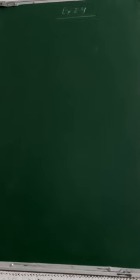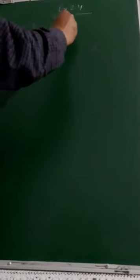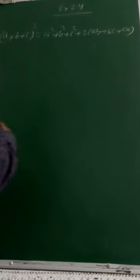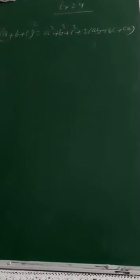Good afternoon to all. So here we are back to Exercise 2.4. Yesterday I shared a new identity: (a+b+c)², whose standard form is always equal to a²+b²+c²+2ab+2bc+2ca. On behalf of this we did question number 4 and question number 5, one part each I have solved for you.